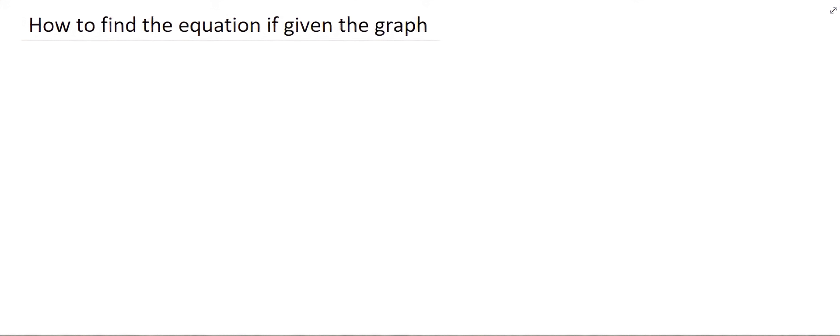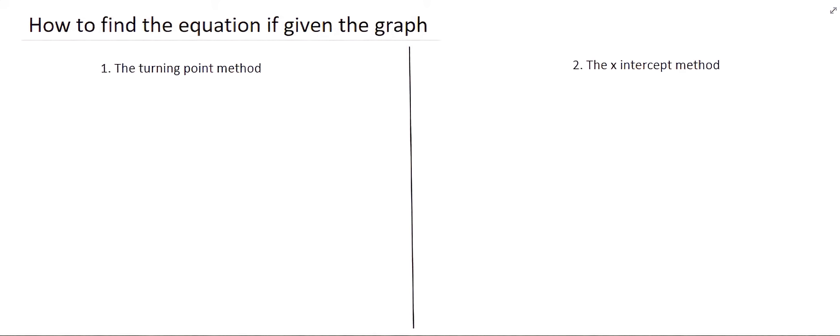In the previous video we looked at how to draw a parabola if you are given an equation. In this video we are going to look at how to find the equation if we are given the graph. For a parabola there are only two ways to do this: the turning point method and the x-intercept method.